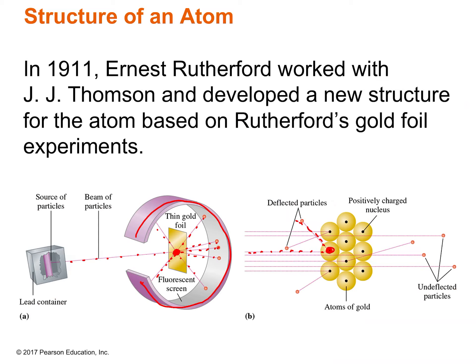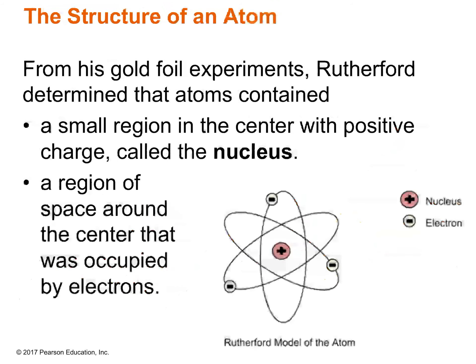He said there must be something in the middle of the atom that is really hard, dense, and positively charged. That hard, dense, positively charged thing — we're going to call it the nucleus. There's something in the middle of the atom that is hard, dense, and positively charged. So he told J.J. Thompson his plum pudding model must not be correct. Instead, it's got to have something hard and positively charged in the middle, and the electrons can be zooming around the outside.